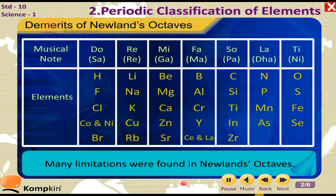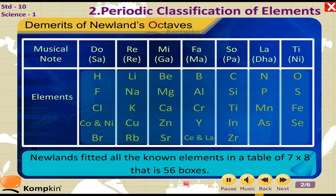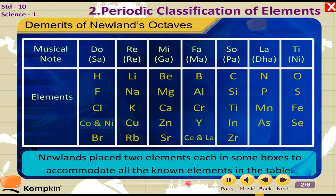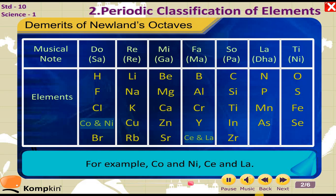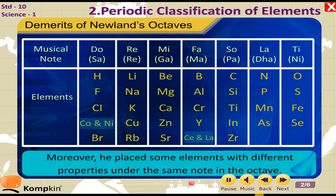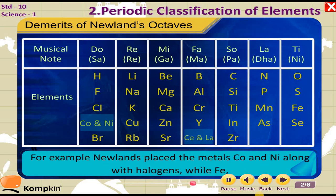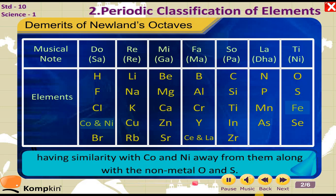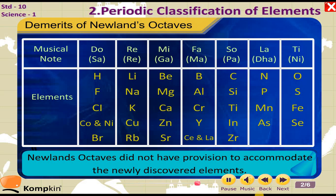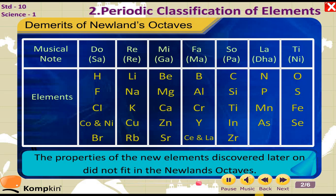Demerits of Newlands' Octaves: This law was found to be applicable only up to calcium. Newlands fitted all the known elements in a table of 7×8, i.e., 56 boxes. He placed 2 elements each in some boxes to accommodate all known elements, for example Co and Ni, and Ce and La. Moreover, he placed some elements with different properties under the same note in the octave. For example, Newlands placed the metals Co and Ni along with halogens, while Fe, having similarity with Co and Ni, was placed away from them alongside non-metals O and S. Newlands' Octaves did not have provision to accommodate newly discovered elements, and the properties of new elements discovered later did not fit in Newlands' Octaves.